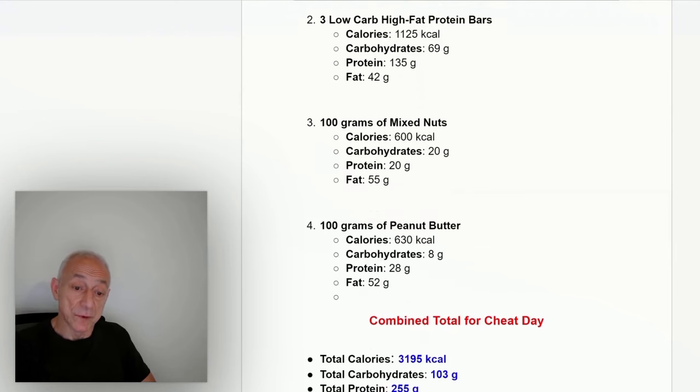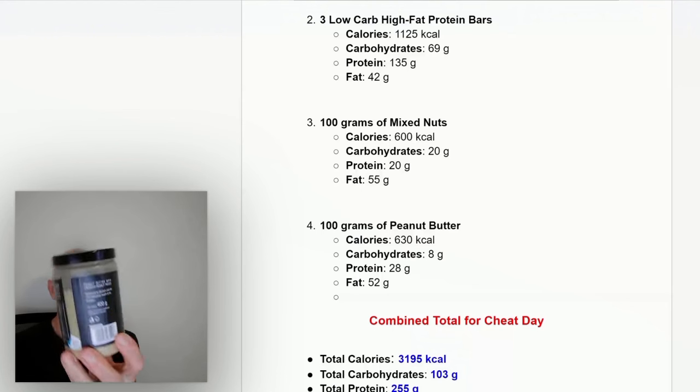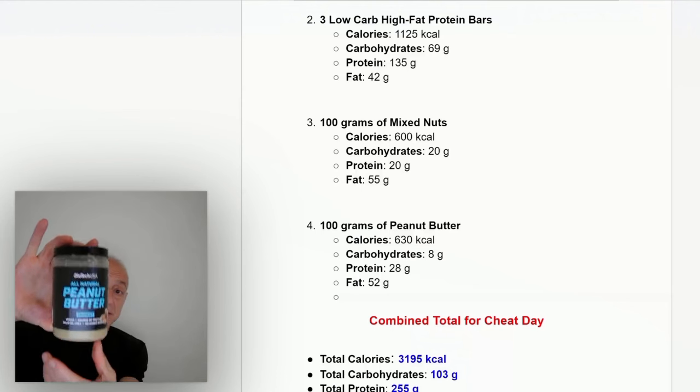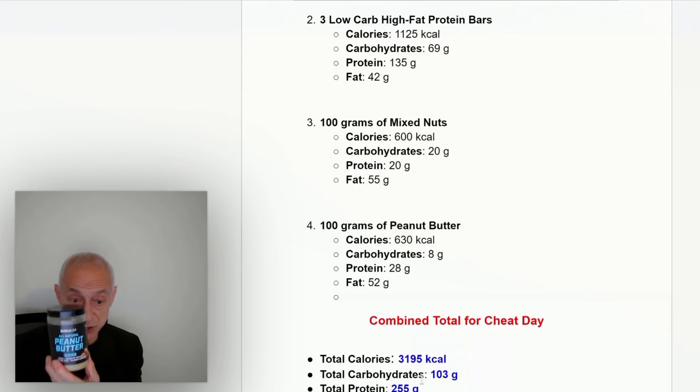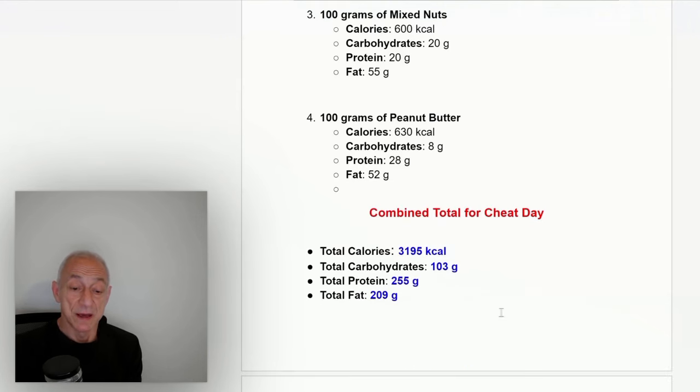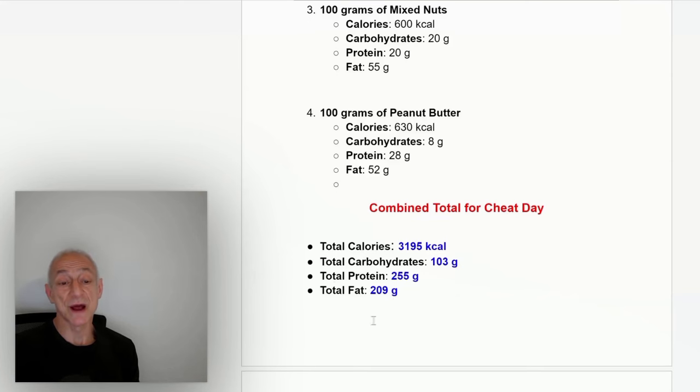Then we have peanut butter, but this is a different kind of peanut butter. This is high-protein peanut butter. As you can see right here, this brand here, which contains 100 grams of it, contains 630 calories, 8 grams of carbohydrates, high-protein 28 grams, and 52 grams of fat. Now, in combination, the whole combined total is 3,200 for that cheat day—3,200 calories, 130 grams carbohydrates, 255 grams of protein, and 209 grams of fat.